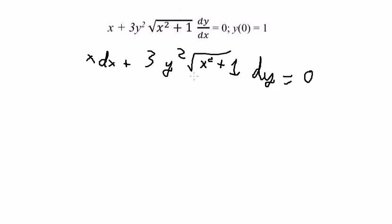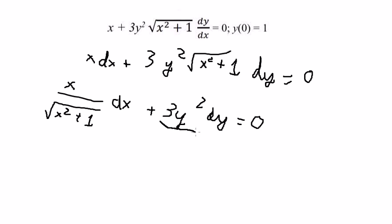Later that, we divide both sides with the square root of x squared plus 1. So we move this one to the right.